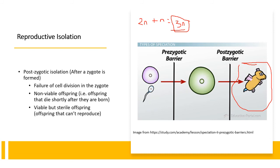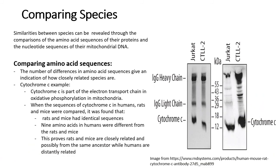In some cases, scientists are also able to use reproductive isolation to determine if organisms can mate with each other or make viable offspring. We can also compare species by checking the similarities of their amino acid sequences of certain proteins, as well as the nucleotide sequences of mitochondrial DNA. If there is more difference in the amino acid sequence, the organisms are more different from each other; more similarities indicate they are closely related. For example, when we test cytochrome C — a protein — in humans, rats, and mice, rats and mice have identical sequences, while humans have very different sequences, showing that rats and mice are closely related and humans are more distantly related.